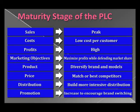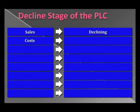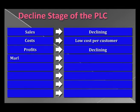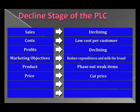The fourth and last stage of the PLC is the decline stage. Sales are declining, cost per customer is low, and profit is also declining. The marketing objective is to reduce expenditure and milk the brand. The product phases out weak items. Prices are cut. Distribution selectively phases out unprofitable outlets.